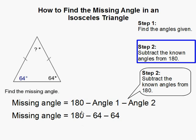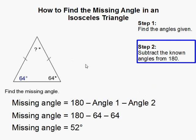Alright, so now I just substitute right here 180 minus 64 minus 64, and our missing angle is then 52 degrees. And that completes our problem.